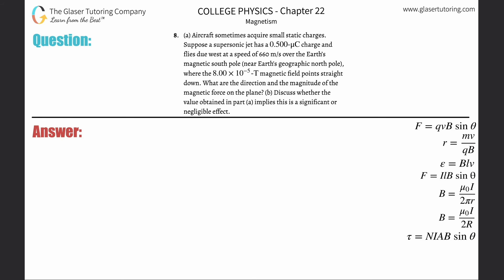Number eight, letter A. Aircraft sometimes acquire small static charges. Suppose a supersonic jet has a 0.5 micro coulomb charge and flies due west at a speed of 660 meters per second over Earth's magnetic south pole, where the 8 times 10 to the minus fifth tesla magnetic field points straight down. What are the direction and the magnitude of the magnetic force on the plane?